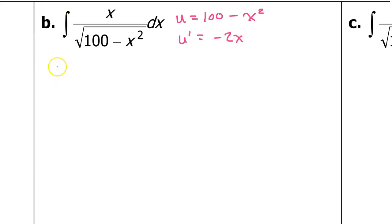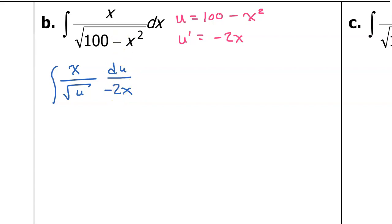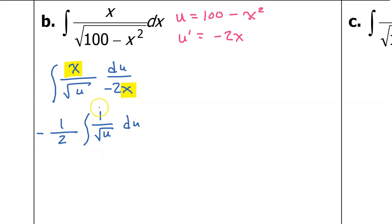If we do this substitution, we will have x over the square root of u. And instead of dx, we will write du over u prime, which is negative 2x. We see that we have an x in the numerator and in the denominator, so those cancel. The negative 2 in the denominator can be brought out front as a negative one-half. I would rather write this as u to the negative one-half power to make it more clear how to perform the power rule of integration.